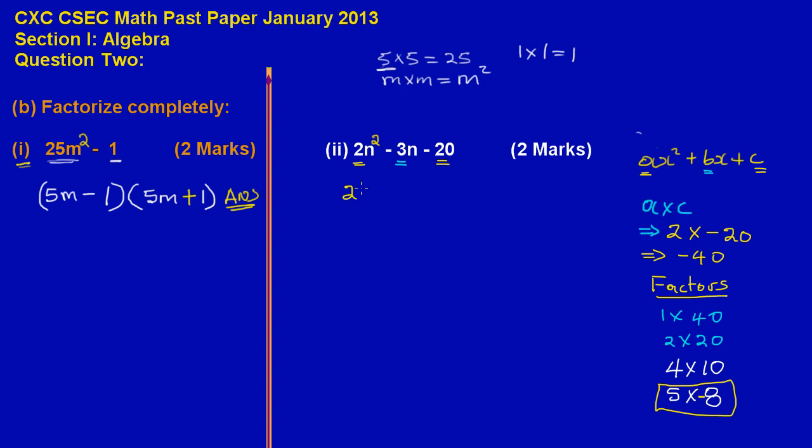So all I'm going to do is to rewrite 2n² minus - and I'm going to use my factors to replace my -3 - 8n + 5n - 20. Notice I haven't changed the value of -3n because if you should note, -8 plus 5 will still give me -3.